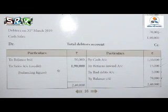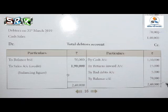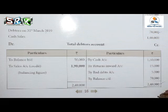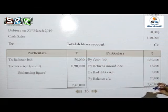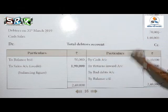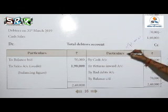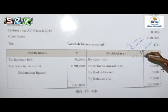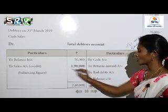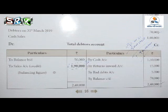Now we add the total of the Credit side first — we get 2,40,000. We post 2,40,000 on both Debit and Credit sides. Then we subtract the Debit side total of 50,000 from 2,40,000. So 2,40,000 minus 50,000 gives us 1,90,000. This is the balancing figure, treated as the Credit Sales amount. So the Credit Sales amount is 1,90,000 — the balancing figure of the Total Debtors Account.